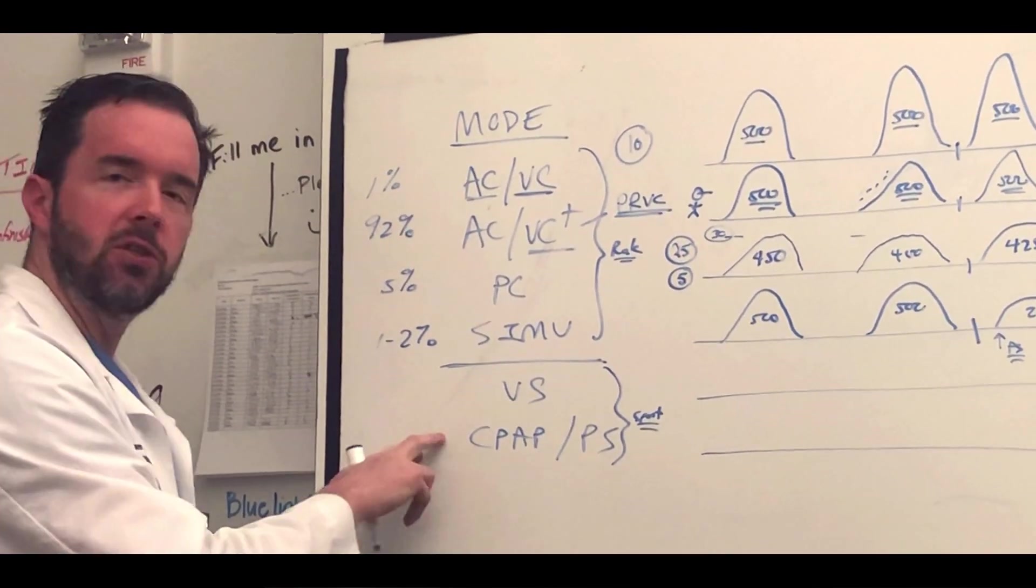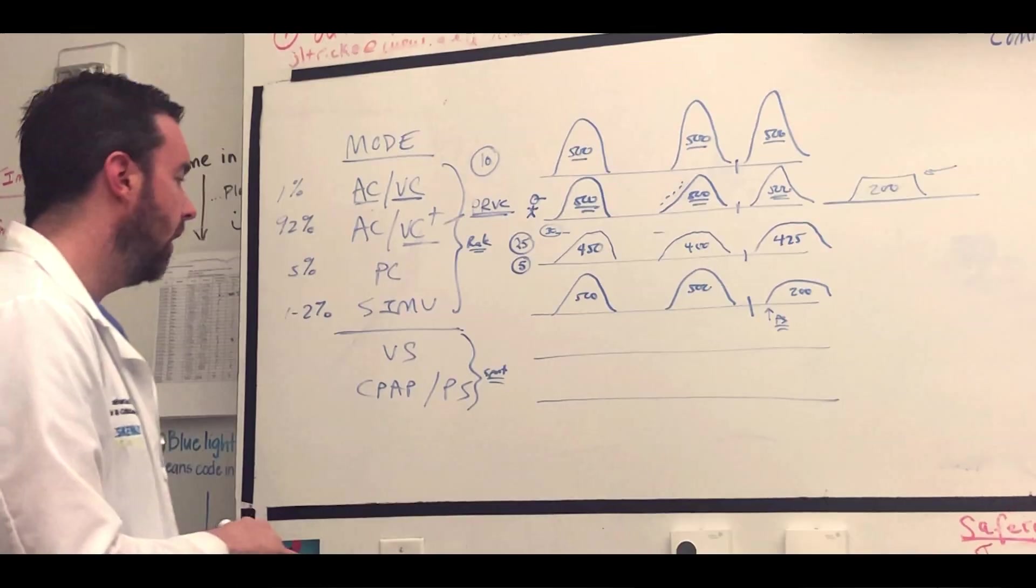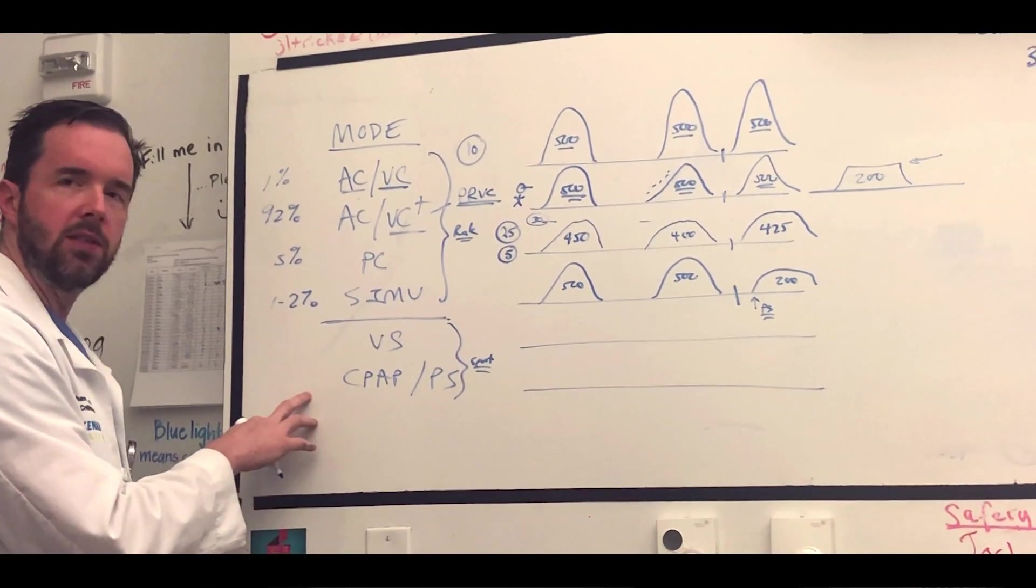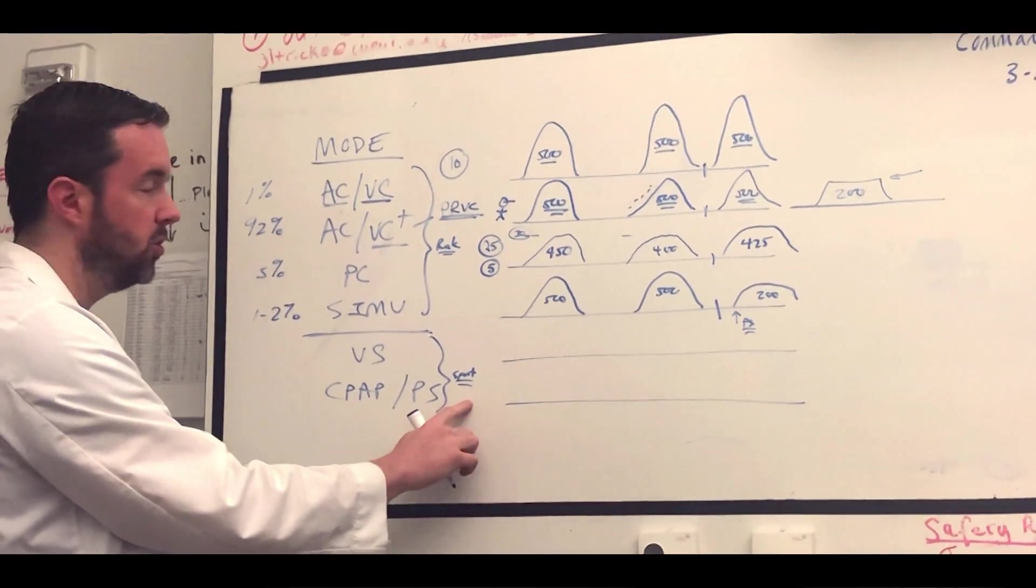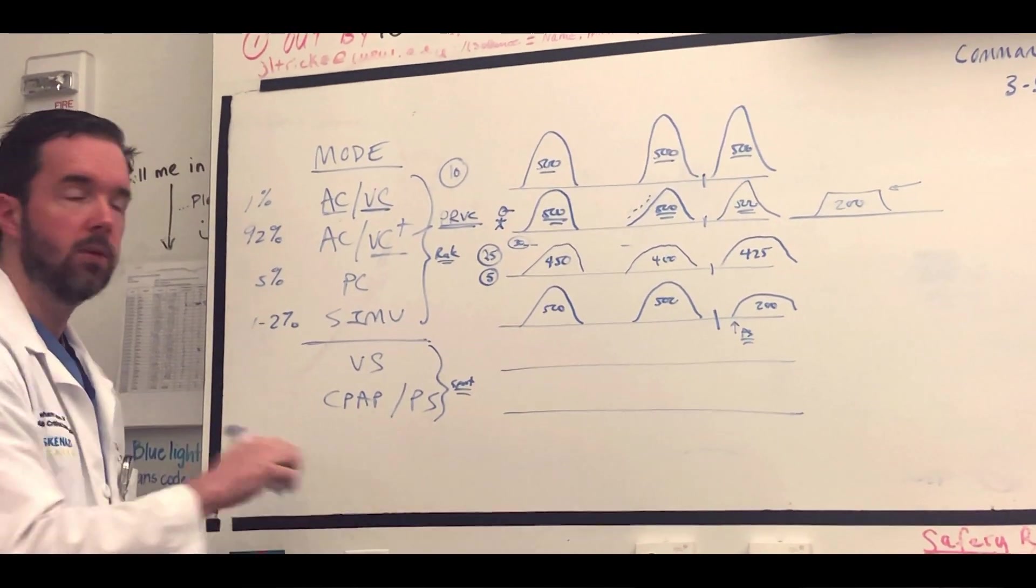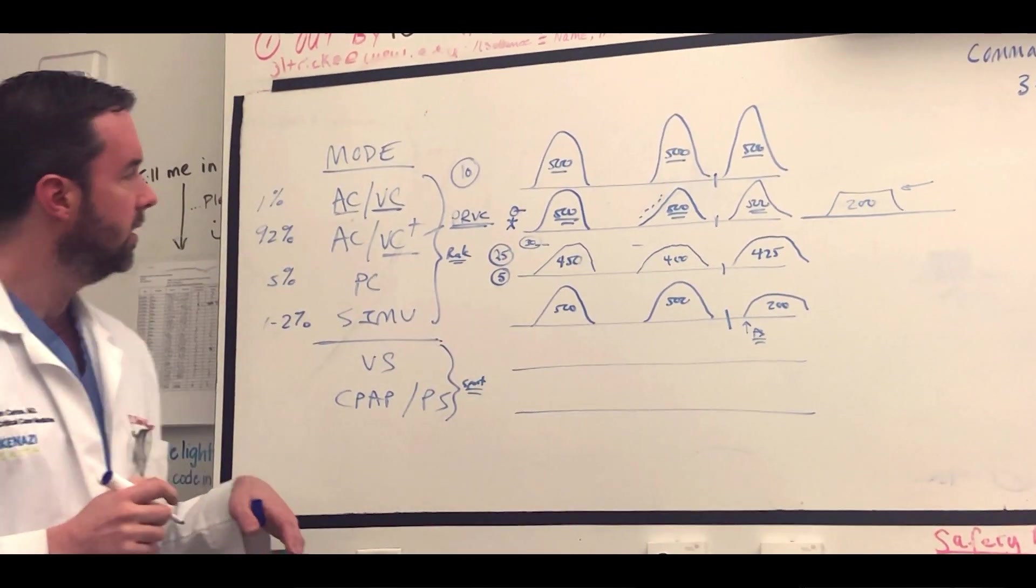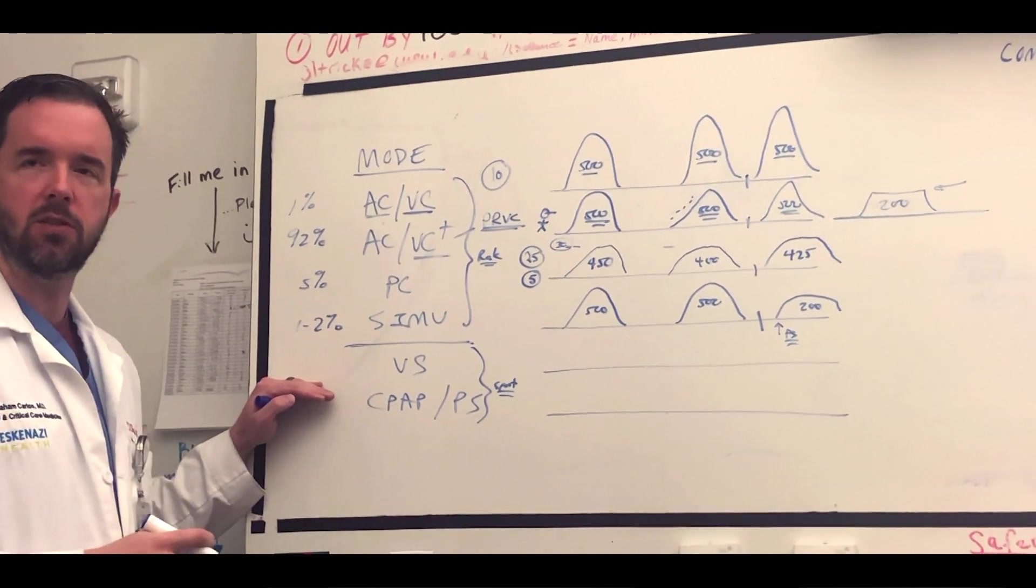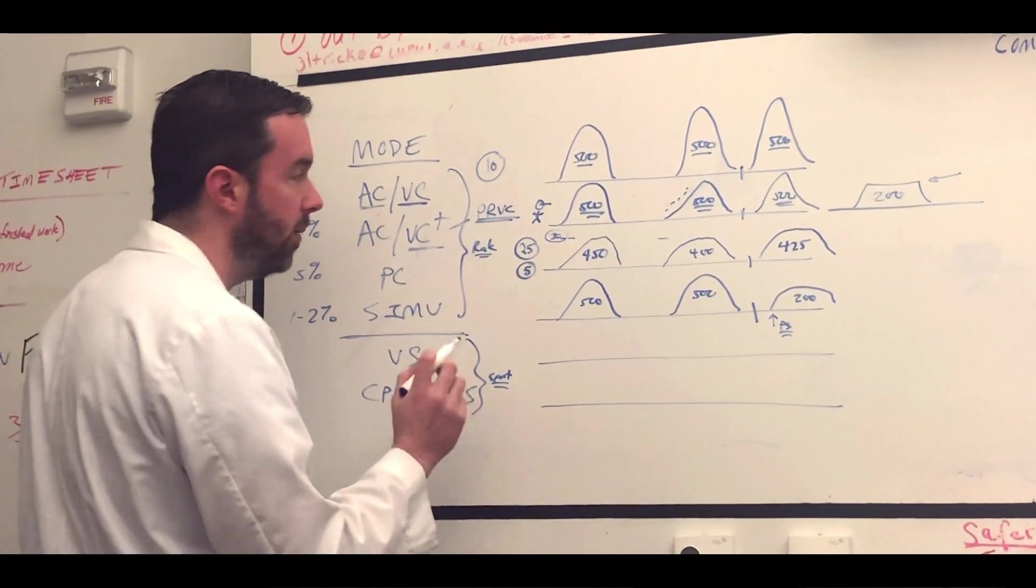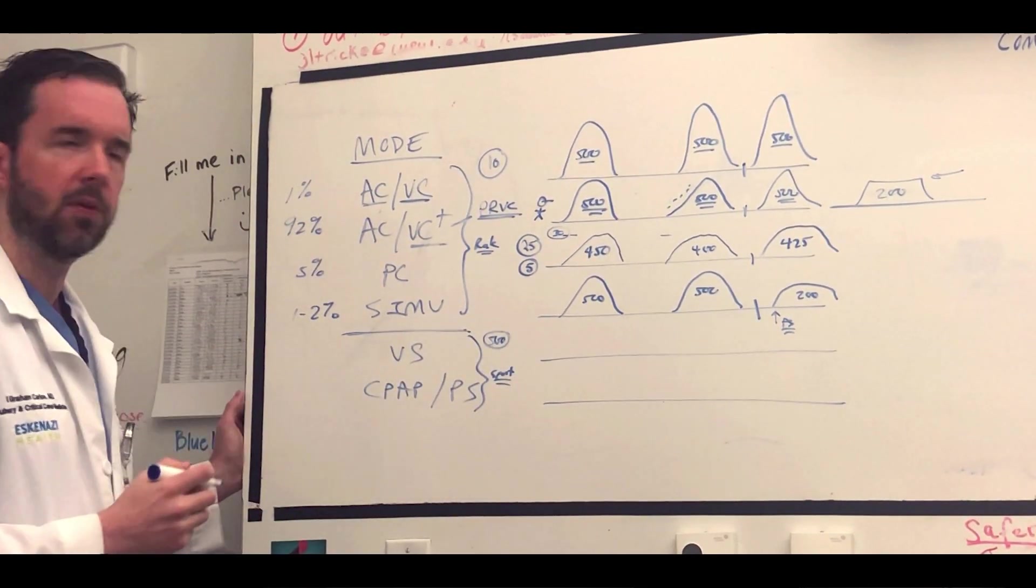Pause point for questions before we do spontaneous. All right, so spontaneous modes. We're going to walk through two: volume support and CPAP pressure support. These modes, obviously, the patient has to be able to trigger the breaths on their own. Many people consider these weaning modes because we use them as we're trying to assess the patient for their readiness for extubation. Oftentimes in volume support, while we don't set a rate, we do set a volume, and I'll use 500 to keep the example the same.